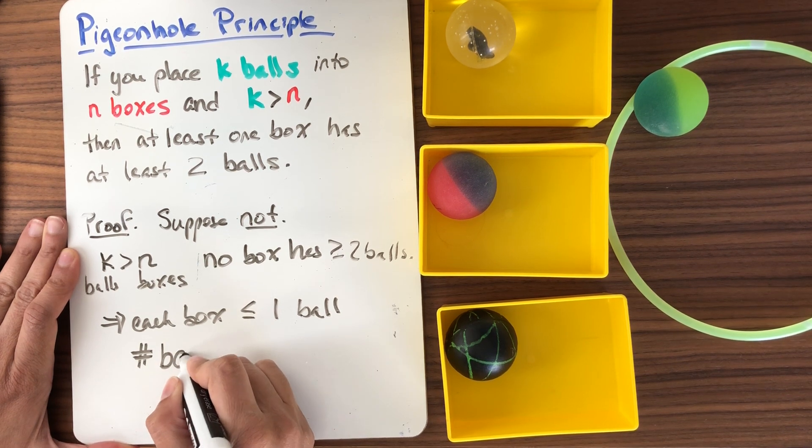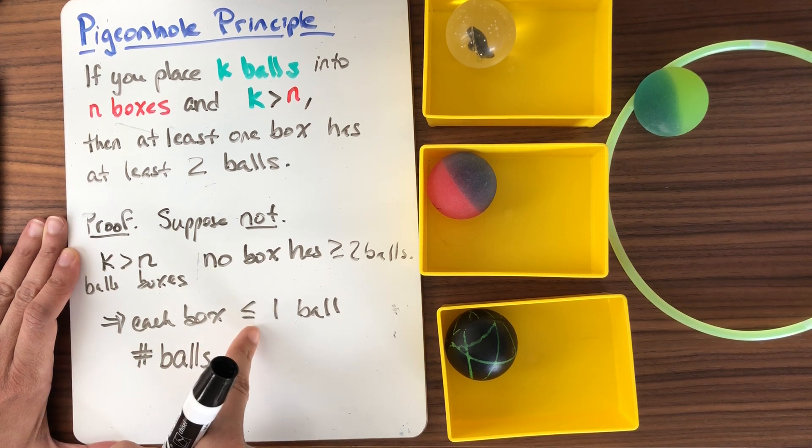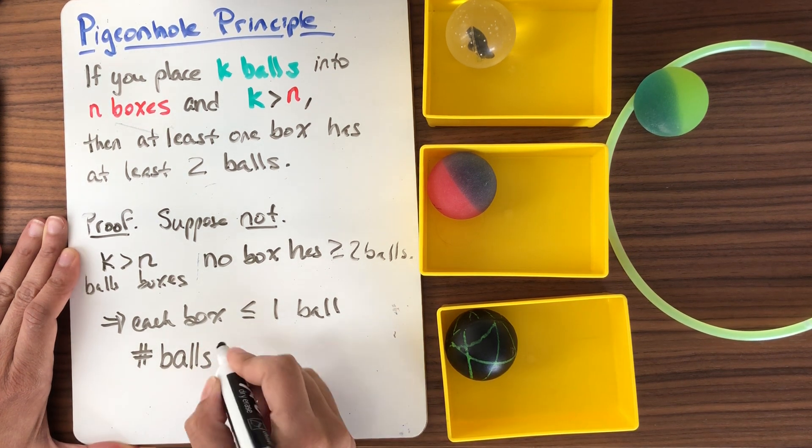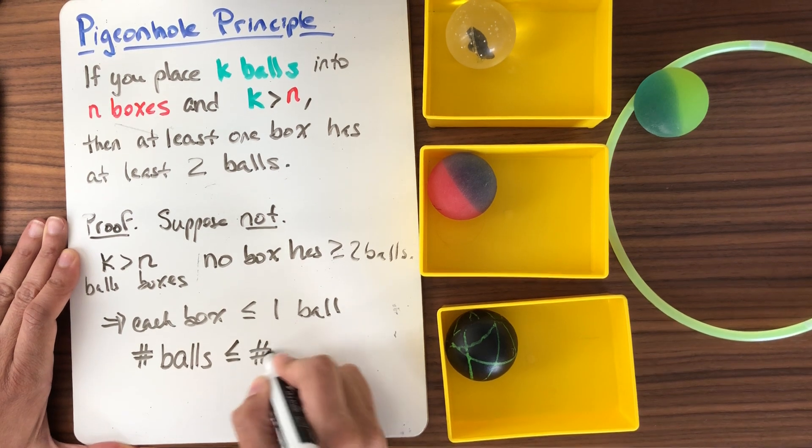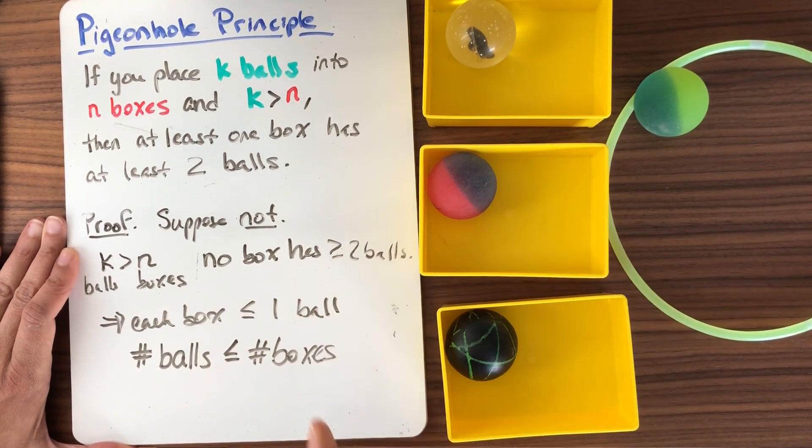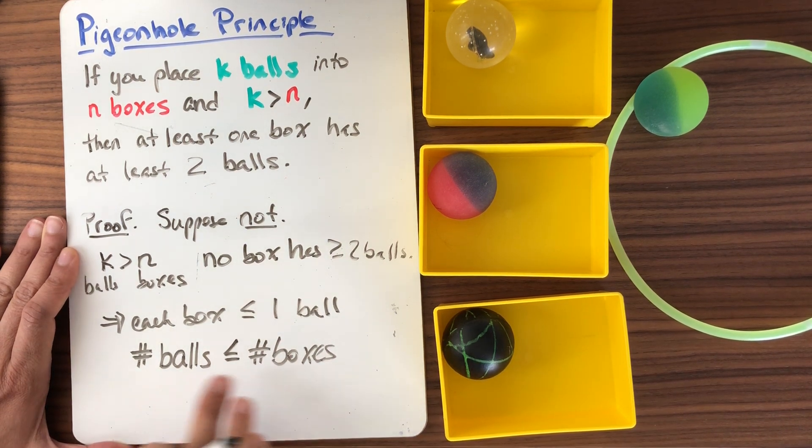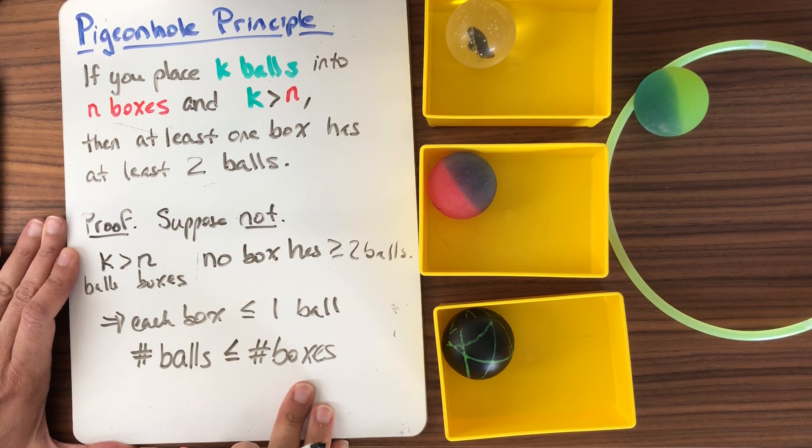The number of balls that we have is at most one ball. Each box has less than or equal to one ball. So the number of balls that I have is no bigger than the number of boxes, right? Because every box has at most one ball. Each box has at most one ball.